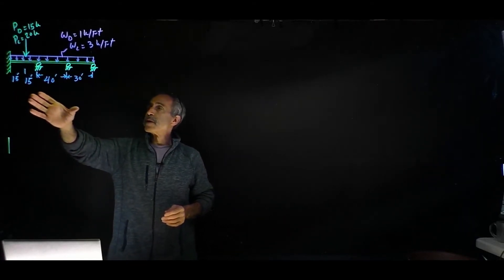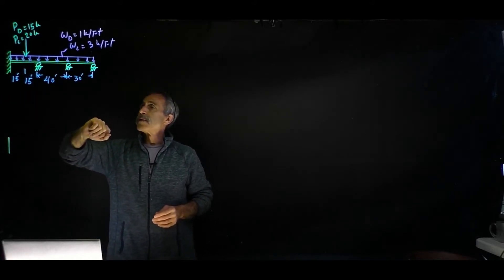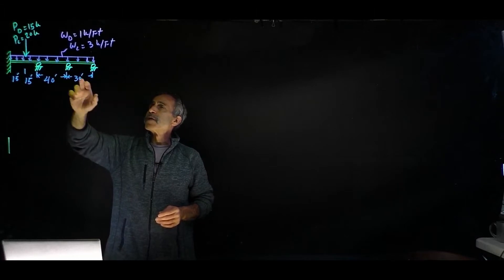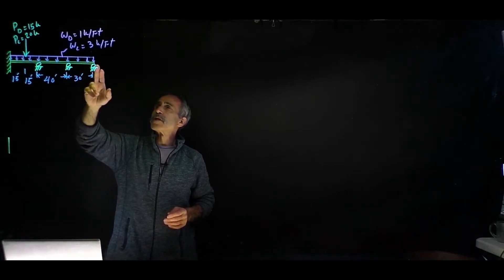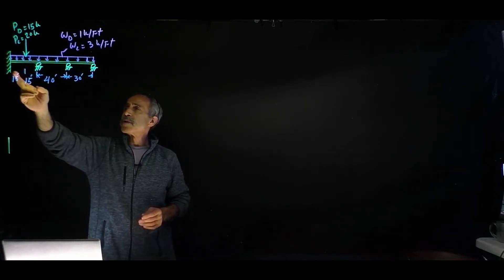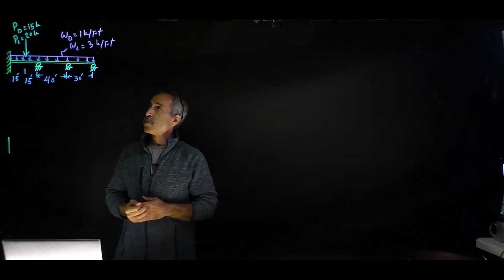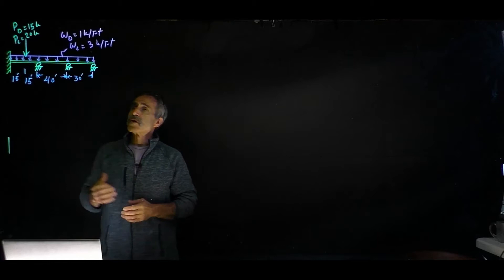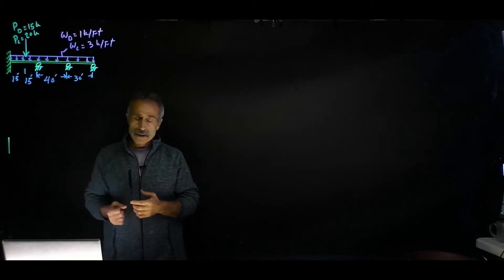We have this problem. The way this continuous beam is fixed in one end and then a roller on the other supported. We have a uniform distributed load of one kip per foot dead load and a live load of three kip per foot. And we have a concentrated load down here in the middle, 15 feet away from the end reaction, of 15 kip dead load and a live load of 20 kips. So we're trying to find the least sized beam for this situation.